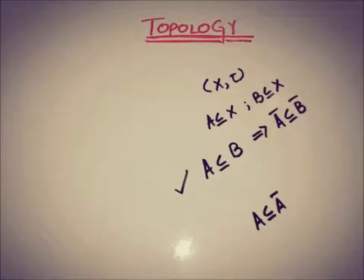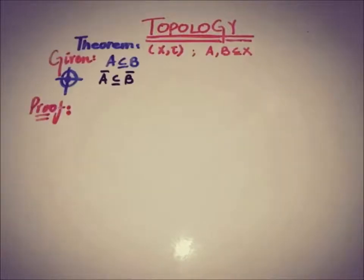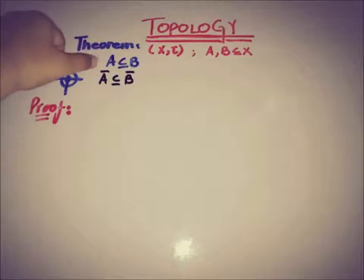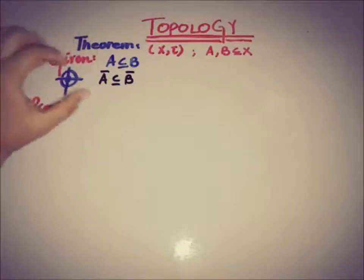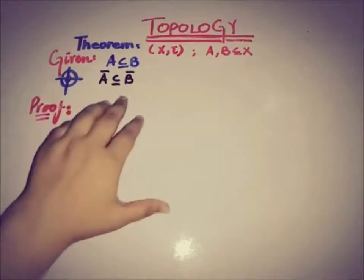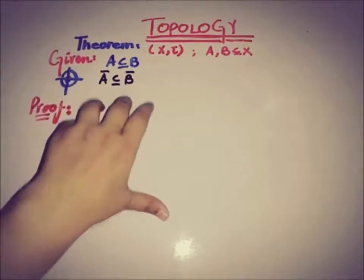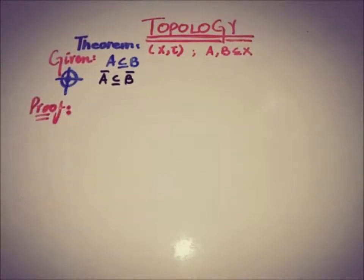Let's start the proof. The given condition is A ⊆ B, and the target to prove is Ā ⊆ B̄.